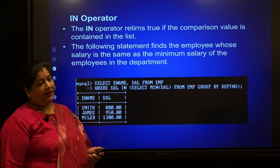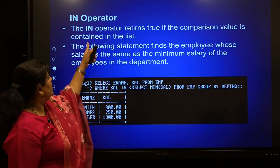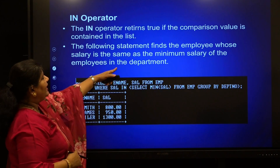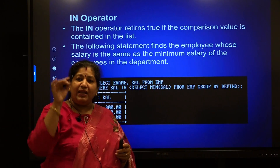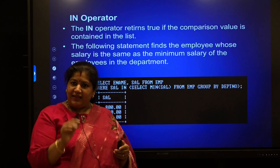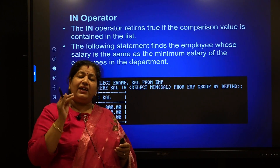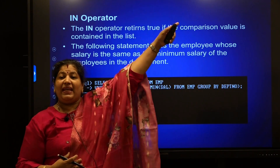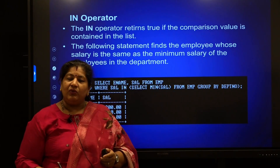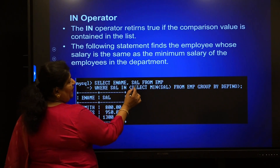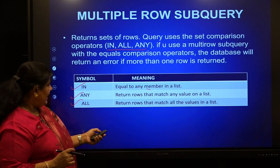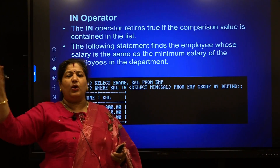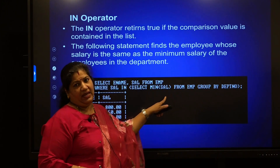For the IN operator, it returns true if the comparison value is contained in the list. For example, find the employees whose salary is the same as the minimum salaries of employees in each department. You find the minimum salary in each department, and the main query finds employees earning that salary. SELECT ename and salary FROM EMP WHERE salary IN (SELECT MIN(salary) FROM EMP GROUP BY department number). Each department's minimum salary becomes a set element, so IN is used.